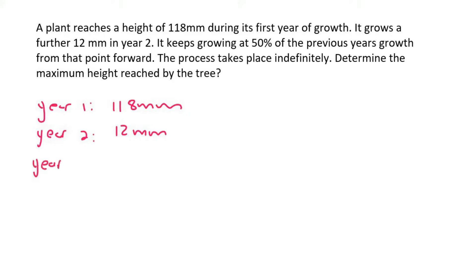Then for year three, they say it keeps growing at 50% of the previous year's growth. So it'll be 50% of 12, so 50% times by 12, which is 6. Then for year four, it'll be 50% of 6 now, which would be 3. And this would just carry on and on.